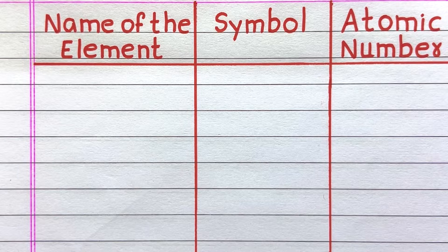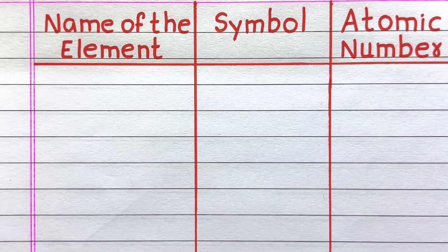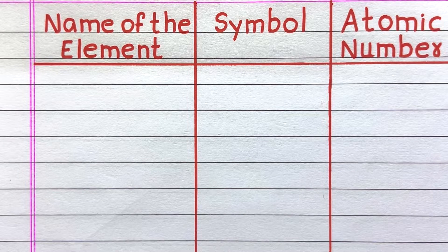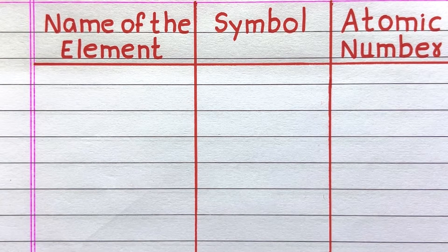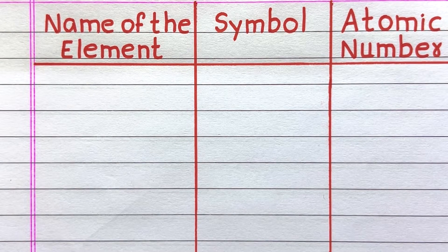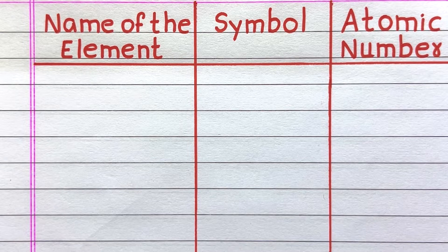Hello everyone. Welcome to my channel 10 Lines Essay. Here in this video, I will write the first 30 elements' names, their symbols, and atomic numbers. Let's get into the video.